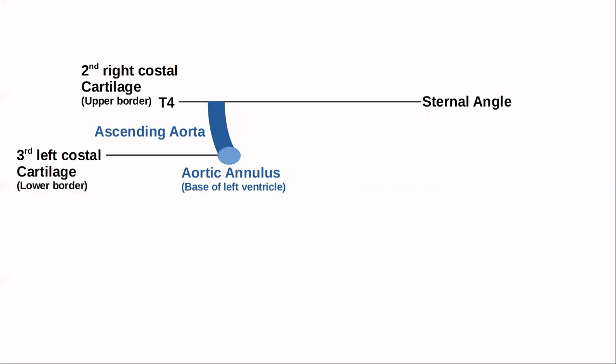These are all multiple choice questions combined into a single slide. The ascending aorta begins at the aortic annulus — the base of the left ventricle — at the level of the lower border of the third left costal cartilage. It ends at T4, also known as the sternal angle, and anteriorly this is the second right costal cartilage upper border.